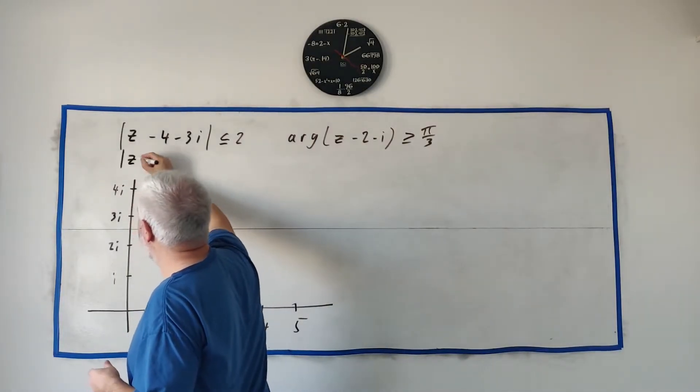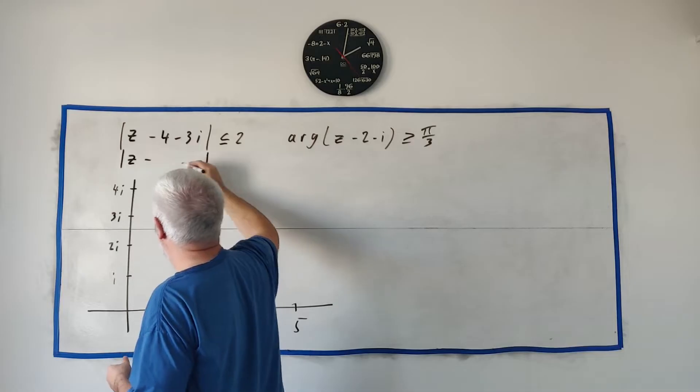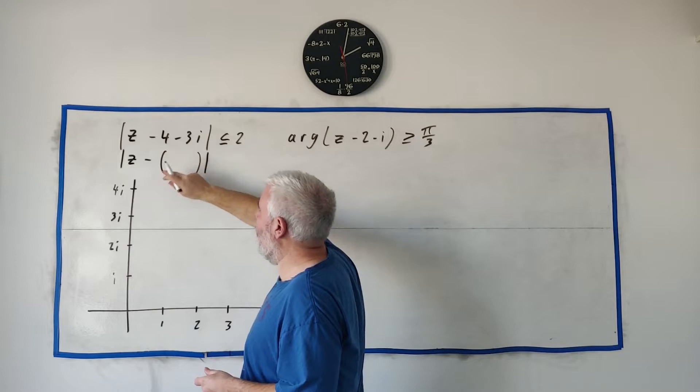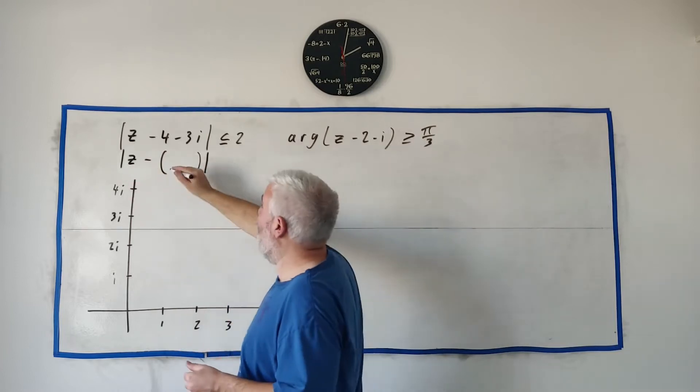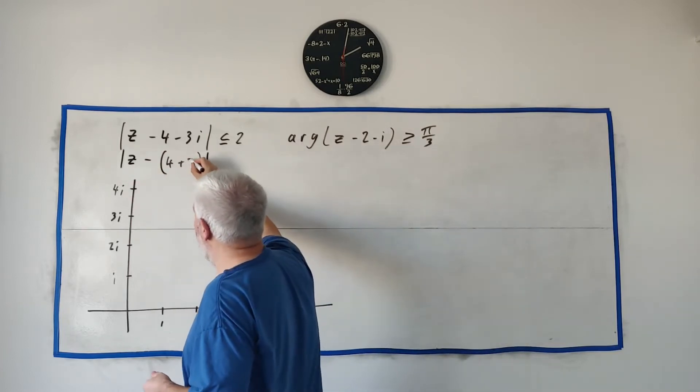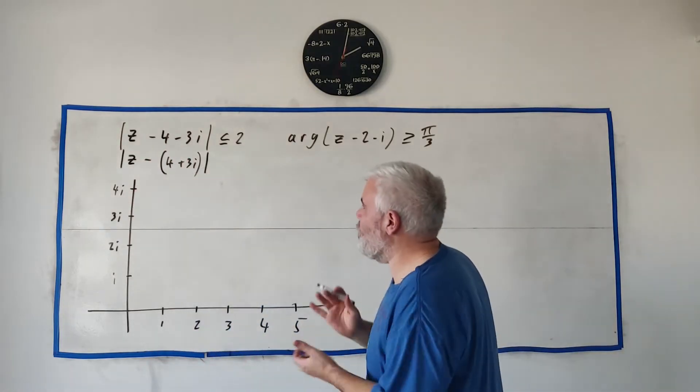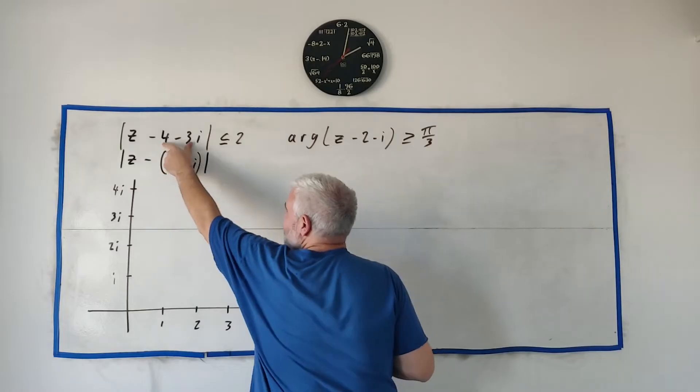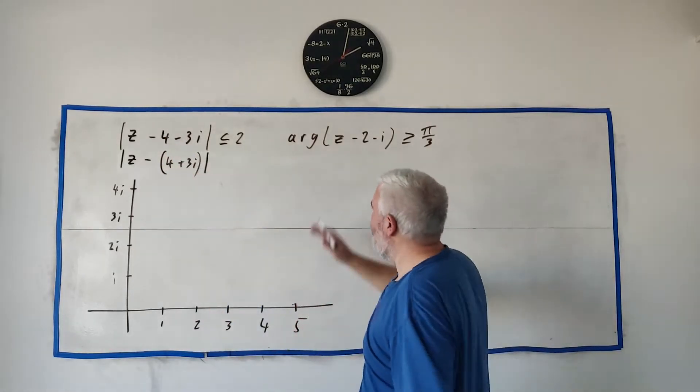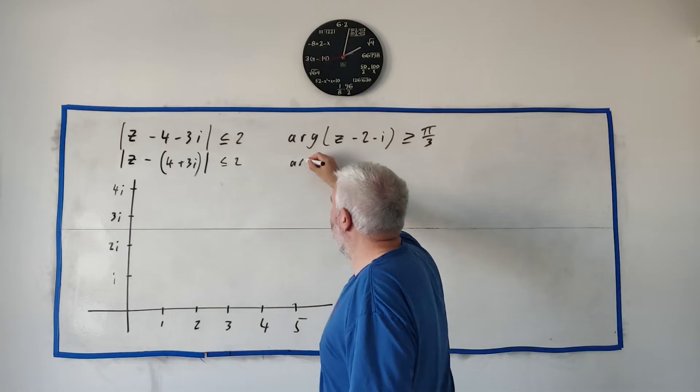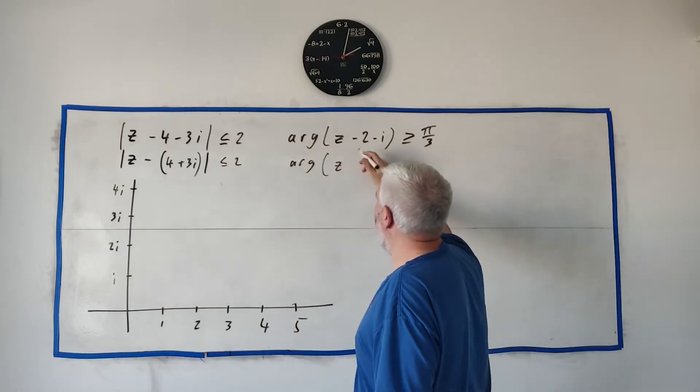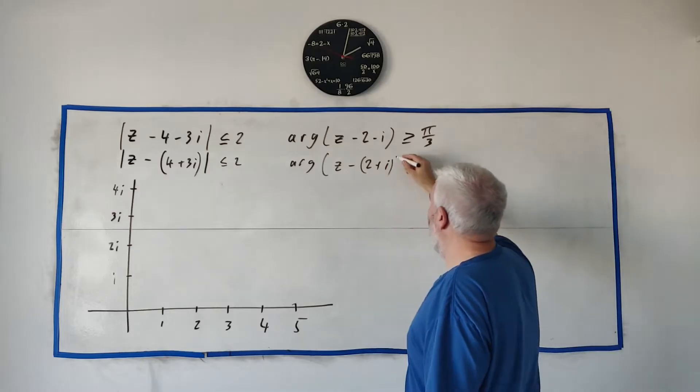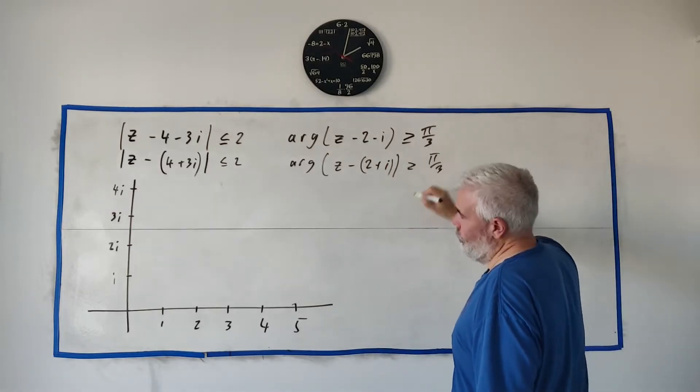To change that we just get Z minus a complex number so that instead of minus 4 minus 3i I'd be minus the number plus 4 plus 3i. That's the simple change I want to make because now we can find this point instead of accidentally finding that one. I'll do something very similar over here with the argument. That becomes the argument of Z minus 2 plus i and that's still greater than or equal to pi over 3.